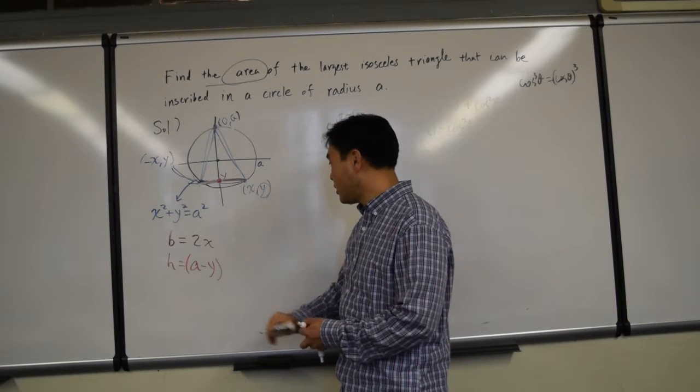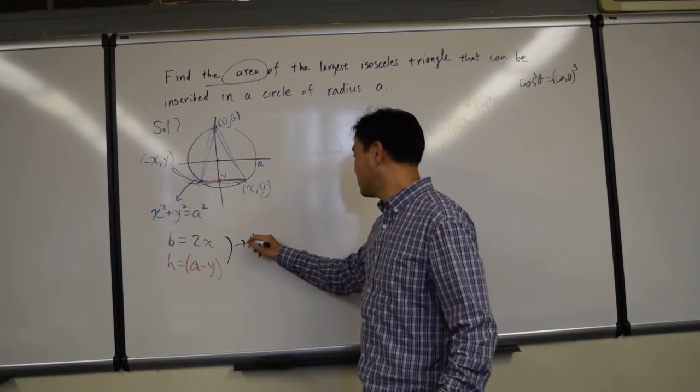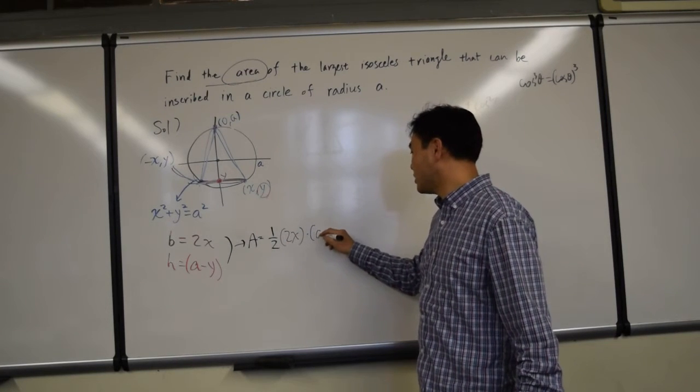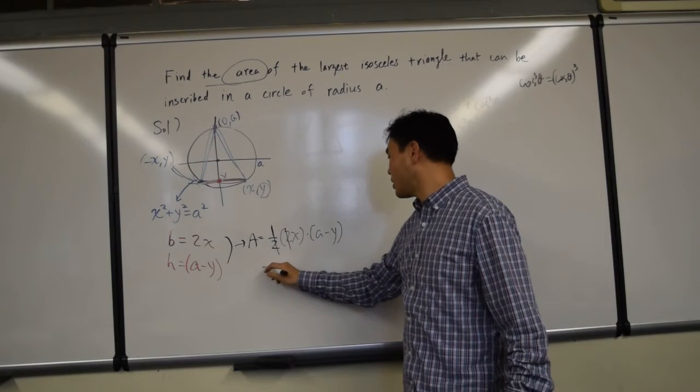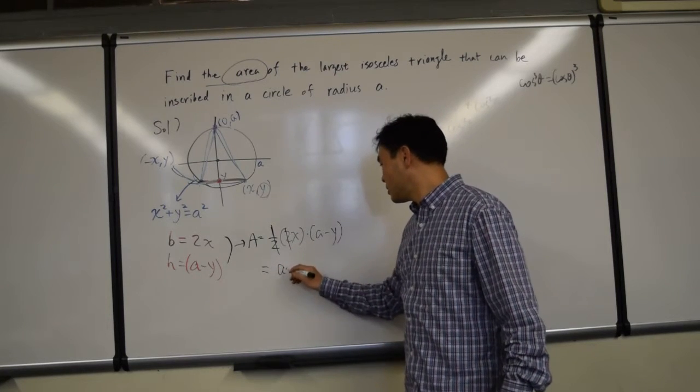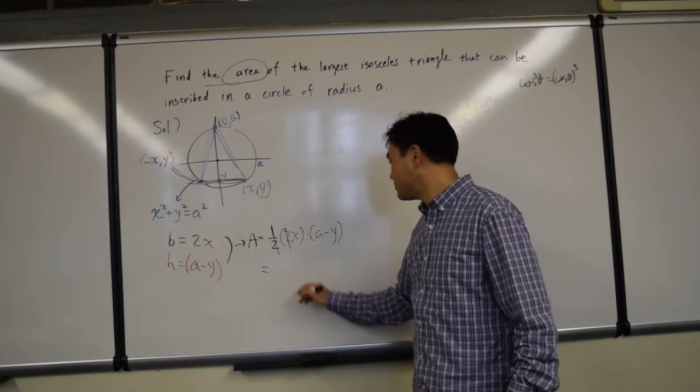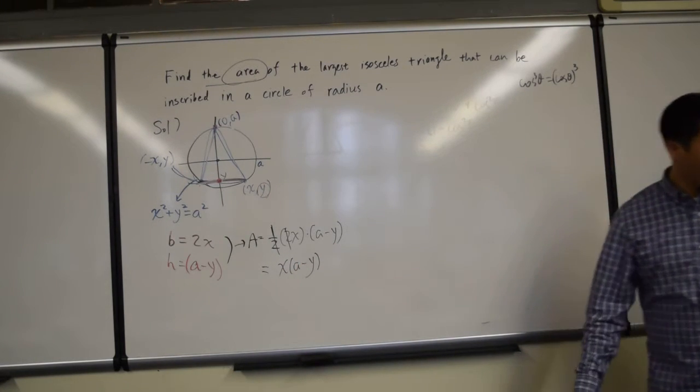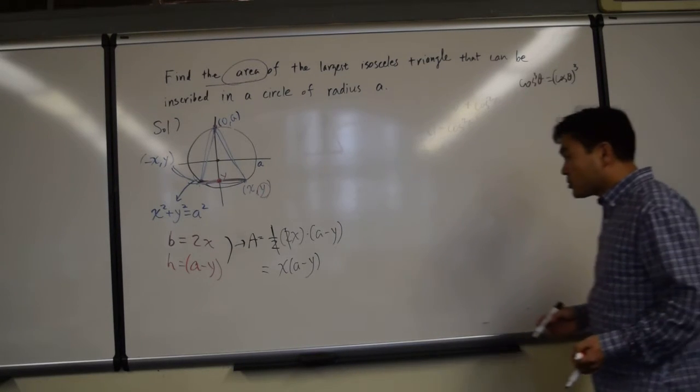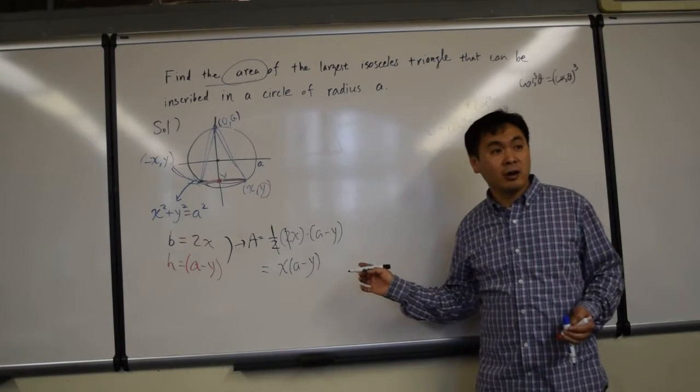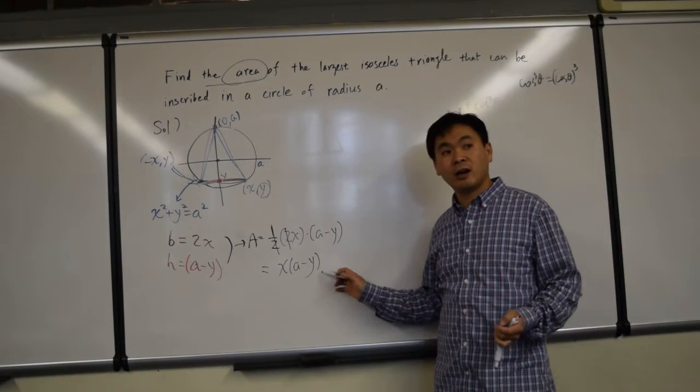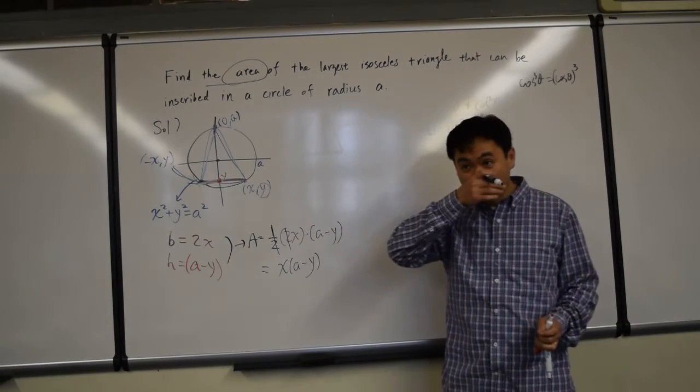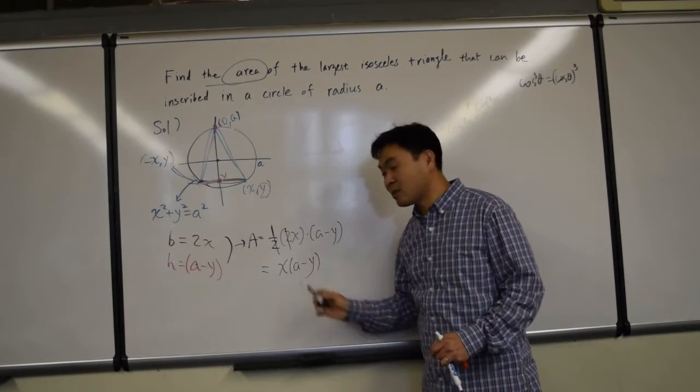Now, therefore, the area is one-half base times height. So they cancel and you get x times a minus y. Now, is that function a function of a single variable? No. What are the variables here? X and y. A is not because a is a fixed number. But x and y are something that varies.